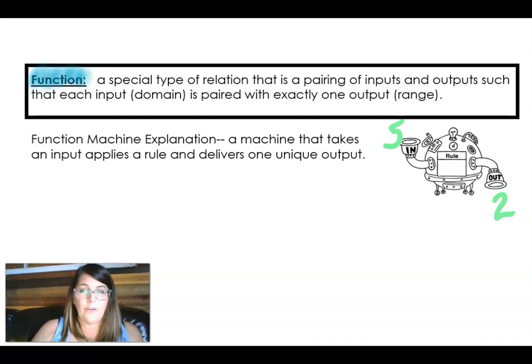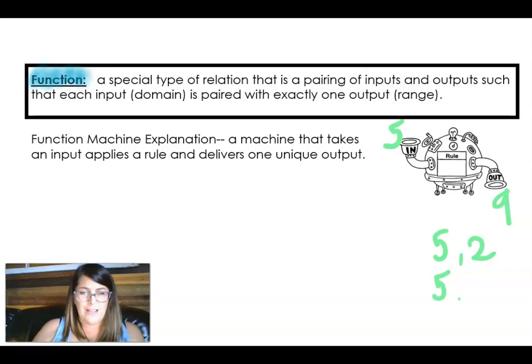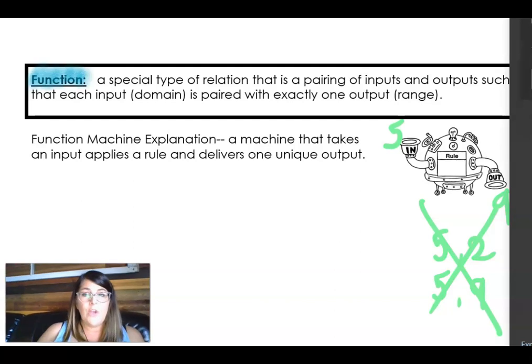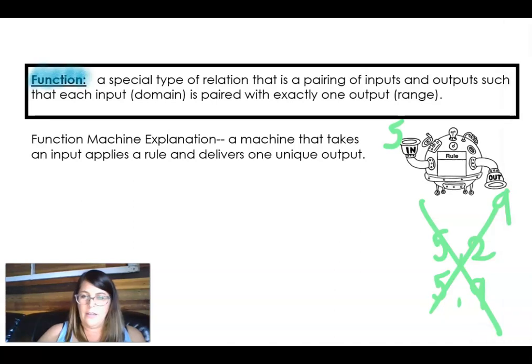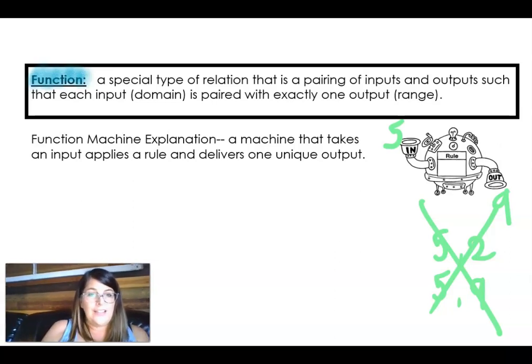So if this is a function machine, if I go up to the machine and I put in a five, and the machine spits out a two, you might have an idea of what's happening inside the machine. Maybe you could say it's subtracting three. You put in a five, and it spits out a two. Now, a little bit later, you go straight up to that machine, and you put in a five, and this time it spits out a nine. And you're like, wait a second. I had the ordered pair five gives me a two, and then five gave me a nine. That is a broken machine. That means this machine doesn't work. You can't count on it.